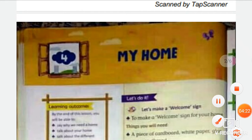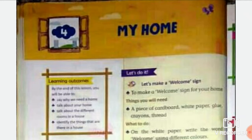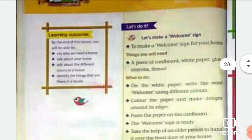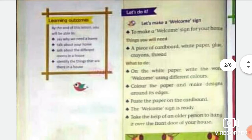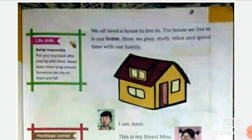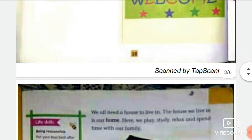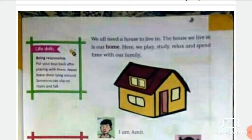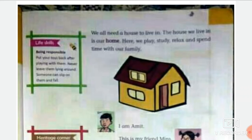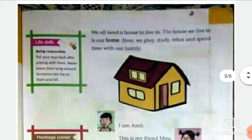Now I'm going to start reading this chapter and explaining it to you. Listen to how I pronounce every single word and read along with me. Turn your page to page number 19, put your finger on the very first line. The first line reads: we all need a house to live in.